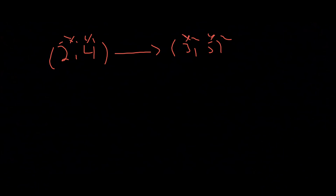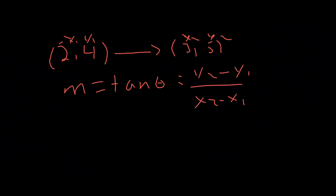We use the slope formula: m equals y2 minus y1 over x2 minus x1. So y2 is 5, y1 is 4, giving 5 minus 4. And x2 is 3, x1 is 2, giving 3 minus 2. So slope m equals 1 over 1, which equals 1.